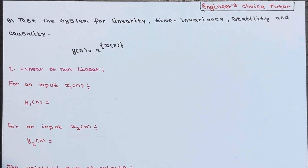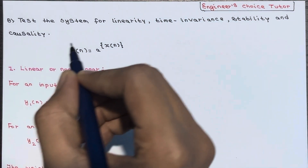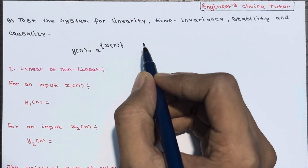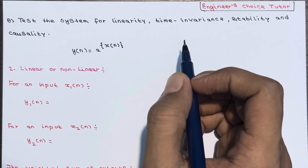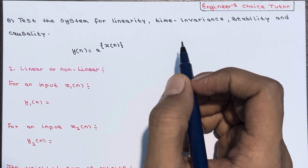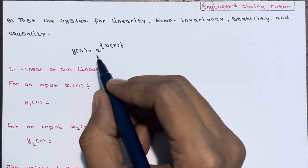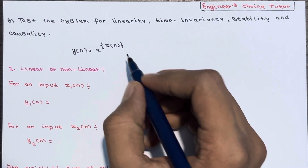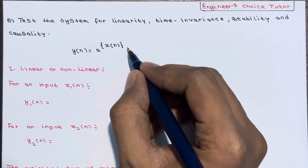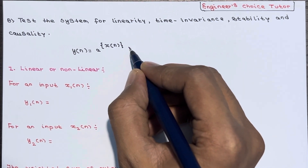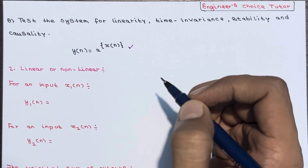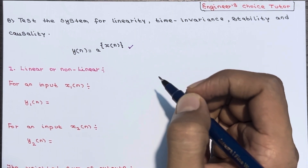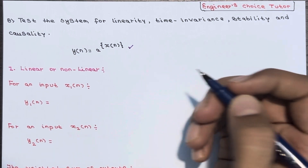In this lecture we will test the system for linearity, time invariance, stability, and causality. The system equation is given as y(n) = a^x(n). Let's check for linearity — whether our system is linear or not.